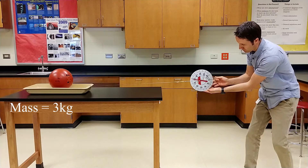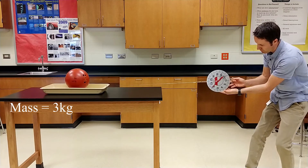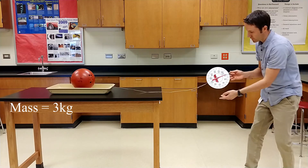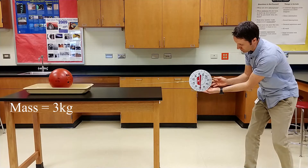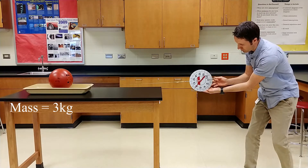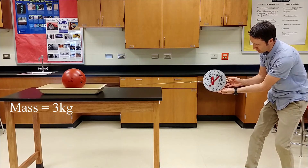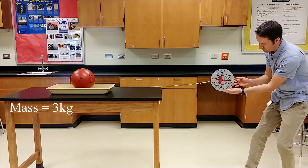Now watch what happens. Once it starts sliding and it's sliding at a constant velocity, how much force do I have to use to keep it moving at a constant velocity? Turns out it's only about 8 newtons. Pull with 4 newtons — doesn't go anywhere. 6 newtons — doesn't go anywhere. 8 newtons — doesn't go anywhere. Only until I pull with up to 12 newtons does it start to move. But once it's moving, it only takes 8 newtons of force to keep it moving at a constant velocity.